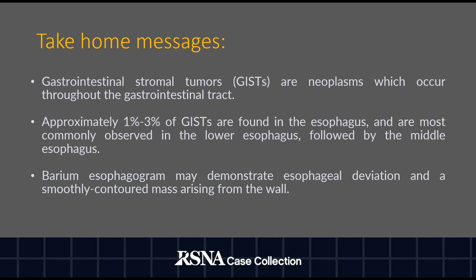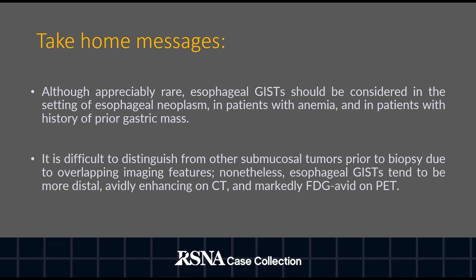Gastrointestinal stromal tumors are neoplasms which occur throughout the gastrointestinal tract. Approximately one to three percent of GISTs are found in the esophagus and are most commonly observed in the lower esophagus, followed by the middle esophagus. On barium esophagram they may demonstrate esophageal deviation and a smoothly contoured mass arising from the wall. Although appreciably rare, esophageal GIST should be considered in the setting of an esophageal neoplasm in patients with anemia and in patients with a history of prior gastric mass.